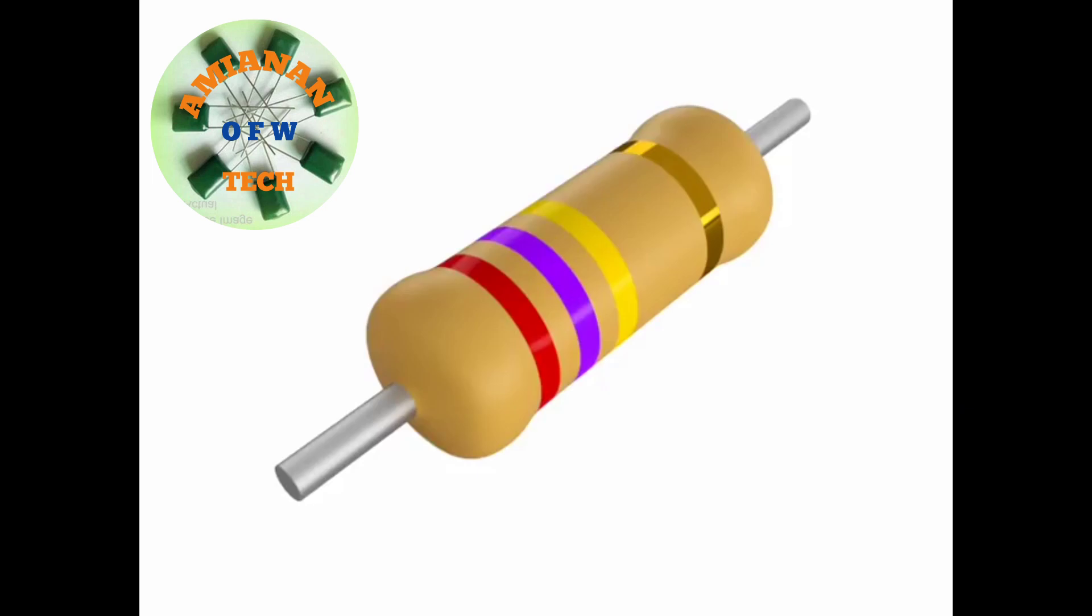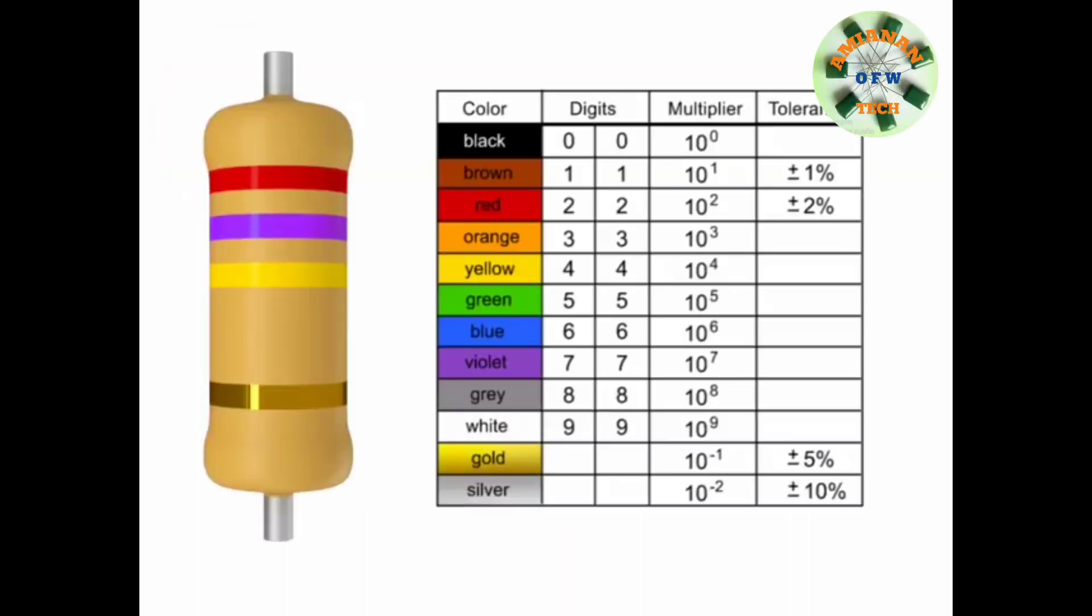Resistors are color-coded with markings or bands that allow you to quickly identify resistance values and tolerance. Using a color chart table will allow you to determine the value of any common four-band resistor. Memorizing this color chart will enable you to become proficient at quickly decoding and using resistors.